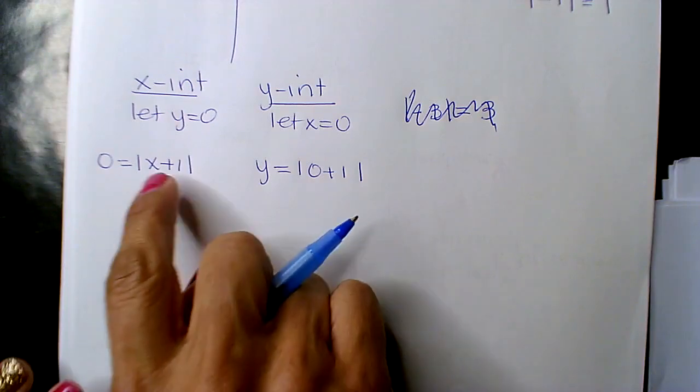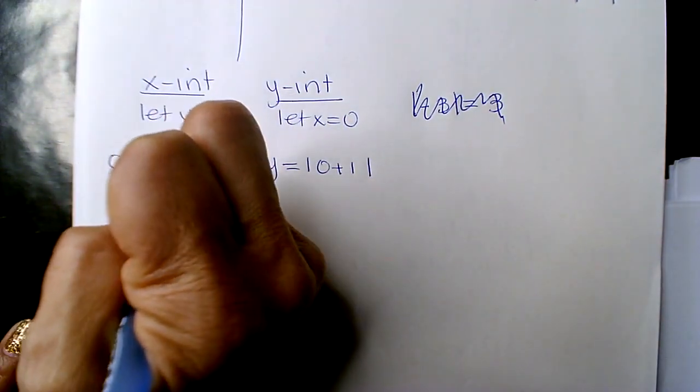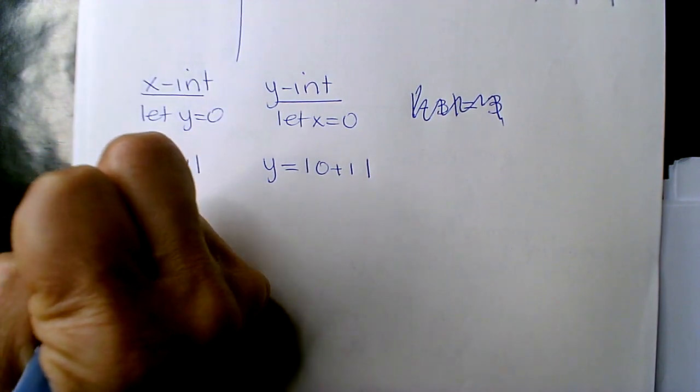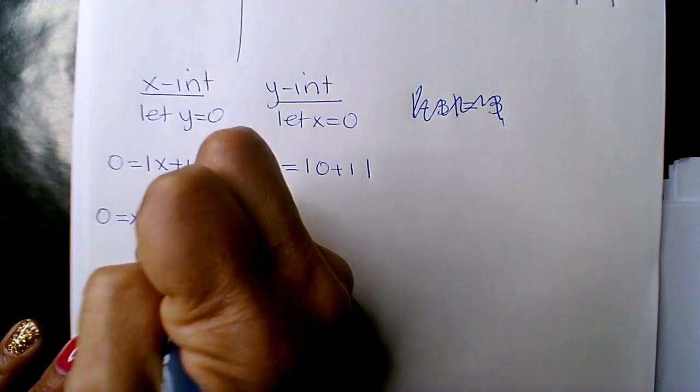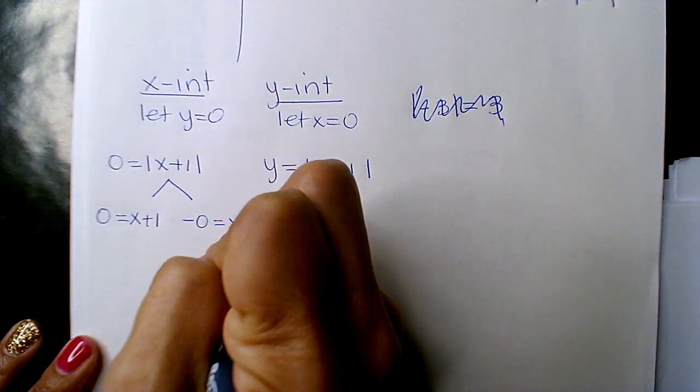So now I'm going to remove the absolute value. Zero equals x plus one, negative zero equals x plus one.